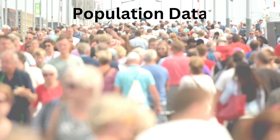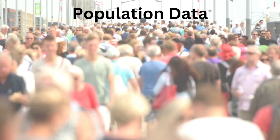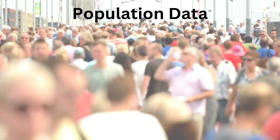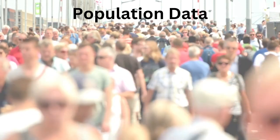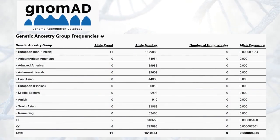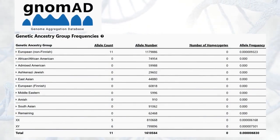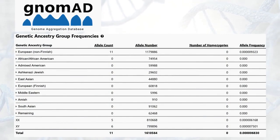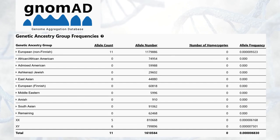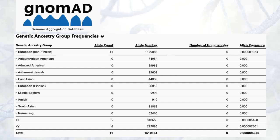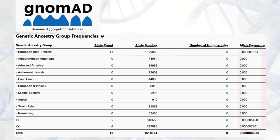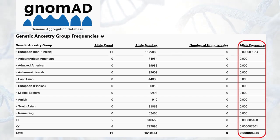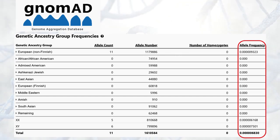Next, population data. The variant of interest is checked for its frequency in population databases like gnomAD. gnomAD is a data aggregate of sequencing results of visibly healthy individuals. By searching for our variant in this database, we can ascertain the allele frequency in the population. If it is not found commonly or if it is absent, it is believed that the variant is rare and may be pathogenic.